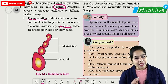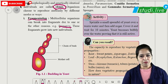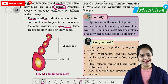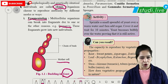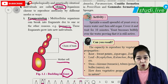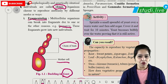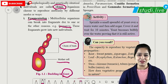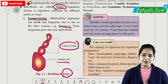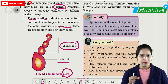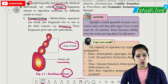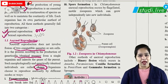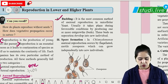The next asexual reproduction method is budding, which takes place in unicellular organisms like yeast. In yeast, there is a mother cell and a bud gets formed. Eventually a chain of buds forms, and when fully developed this chain separates. The separated buds give rise to new individual yeast organisms.